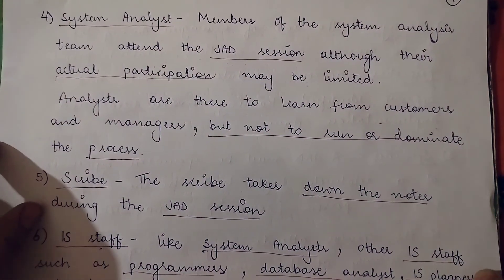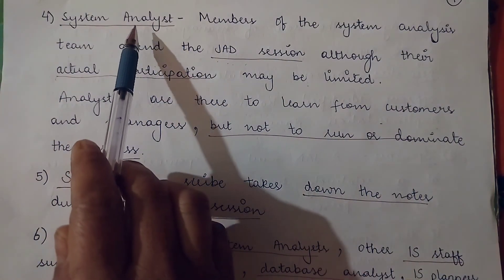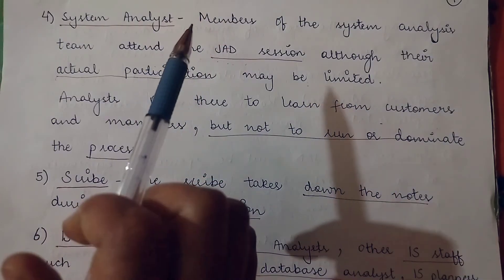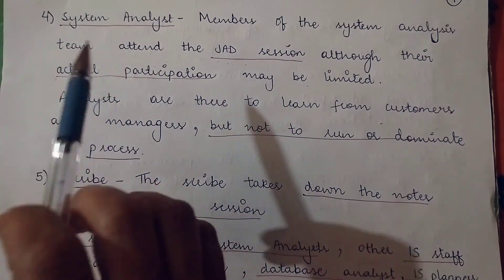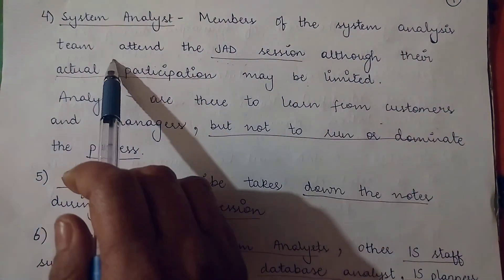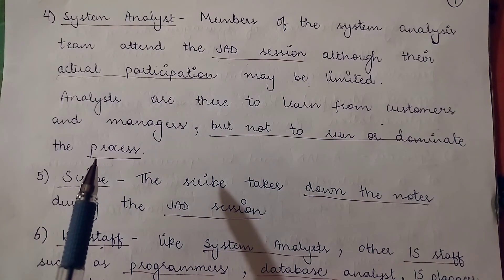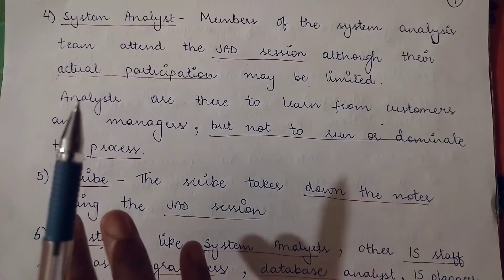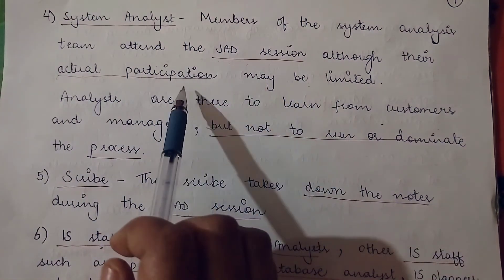The fourth participant is the system analyst. The entire system analysis and design process is not possible without the system analyst, who is responsible for developing the information system, doing the documentation, the preliminary investigation, and the system analysis. Members of the system analysis team attend the JAD session, although their actual participation may be limited — they are not there to approve schedules or costs but to gain insight into user requirements and expectations.